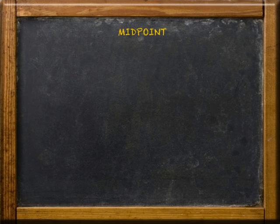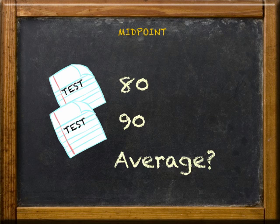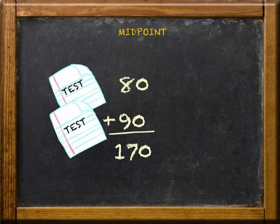Got a question for you first. If you took two math tests and made an 80 on the first one and a 90 on the second one, what would your average be? Well, let's add them up and divide by 2. You should have 85.